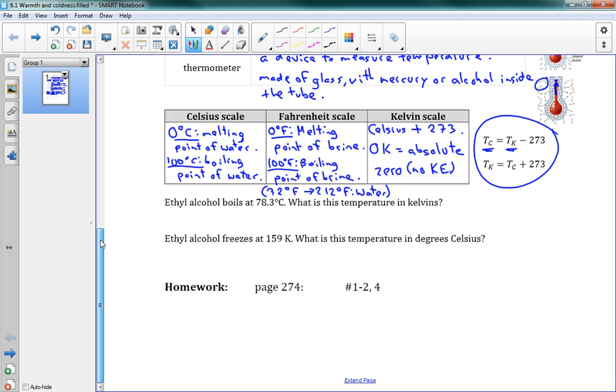It says ethyl alcohol boils at 78.3 degrees Celsius. What is this temperature in Kelvin? Well, we use our formula, Tk is equal to Tc plus 273. This gives us 78.3 plus 273, which is equal to 351.3 Kelvin.